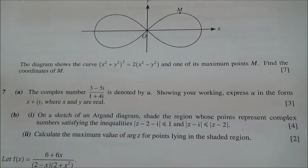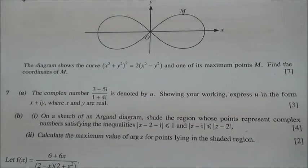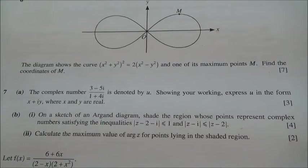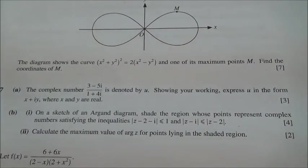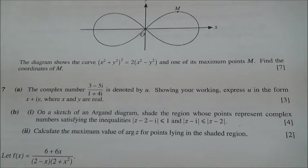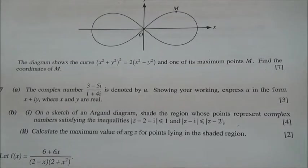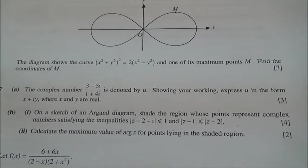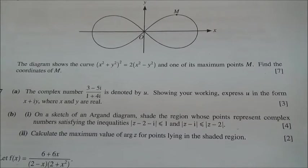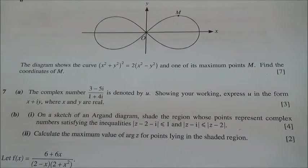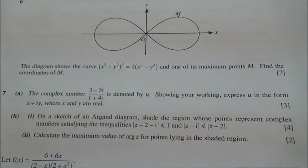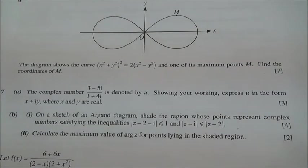Question number 7 taken from June 2014, HSC Advanced Level Maths. The complex number 3 minus 5i over 1 plus 4i is denoted by u. Showing your working, express u in the form x plus iy, where x and y are real.